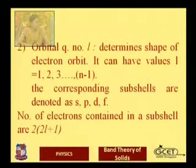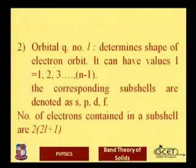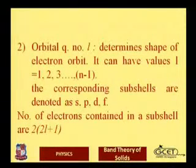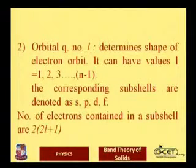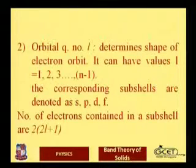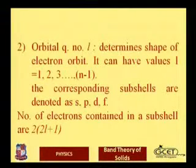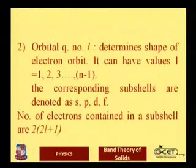The orbital quantum number l determines the shape of the electron orbit. It can have values from 0 up to n−1. The corresponding subshells are denoted as s, p, d, and f. s corresponds to l=0, p to l=1, d to l=2, and so on. The number of electrons contained in a subshell is 2(2l+1).